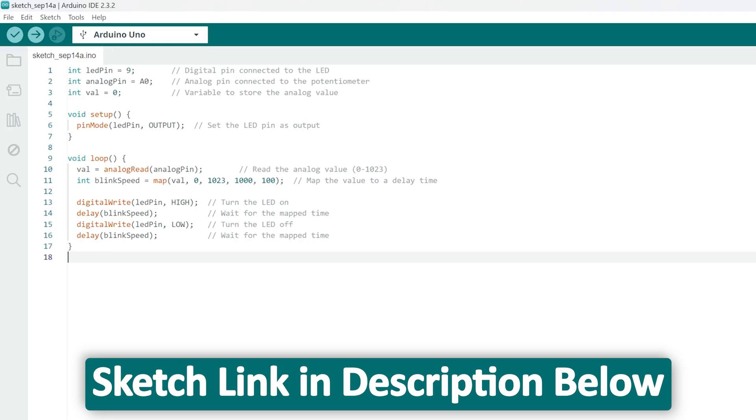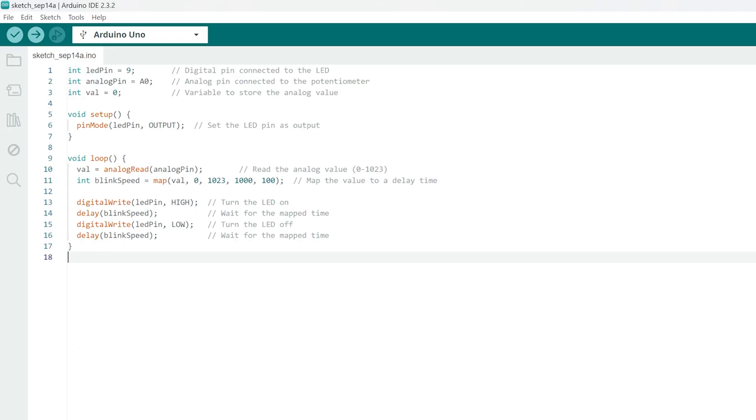Then copy and paste this sketch that I'm going to provide you in the description of this video. So here we can see we are initializing LED pin 9, which is a digital pin, and then we are defining a variable having initial value of 0, which will basically store the analog value. And then here you can see we are setting pin mode as an output, then we are using loop, and then here we are trying to read the value of potentiometer in analog pin.